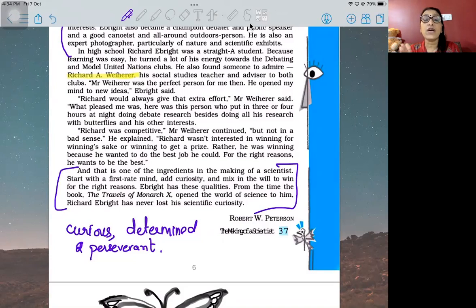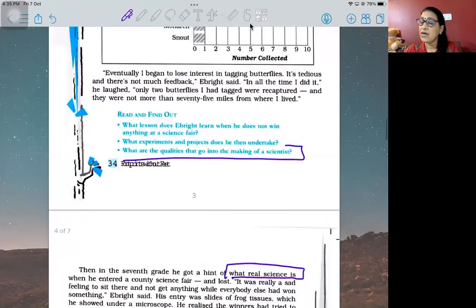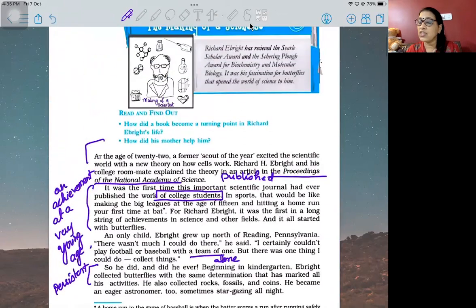Your mind should be crystal clear. Add curiosity - put a little salt of curiosity in it - and mix in the will to win for the right reasons. Add one more ingredient: winning not because you want to show others down or get first prize, but because you want to do the best. Ebright has all these qualities. From the time the book 'The Travels of Monarch X' opened the world of science to him, he has never lost his scientific curiosity. This is a common exam question: how did the book become the turning point, what role did his mother play, what are the ingredients in making a scientist. These are very popular, repeated questions - like what lesson does Ebright learn when he doesn't win, what are the qualities that go into making a scientist. The same question is given in different ways - how did the book become a turning point, how did his mother help him. The question is the same, but twisted in the question paper, and the answers are the same.